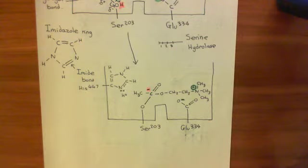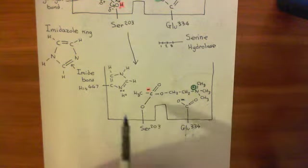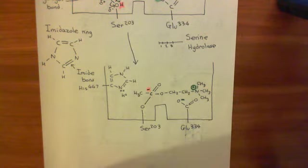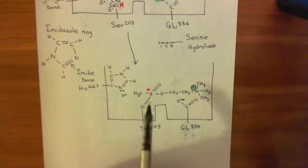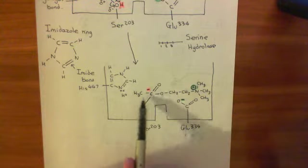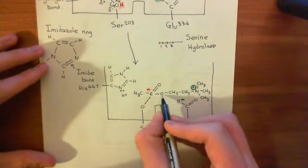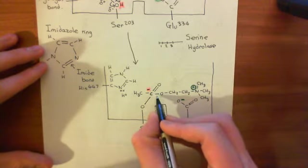So what we now want to look at is how we're actually going to break this intermediate down. What's going to happen is this carbon doesn't like having this negative charge here. So this oxygen here is going to break this bond now.